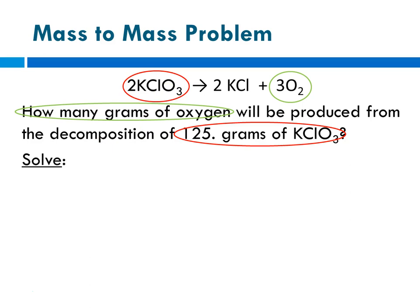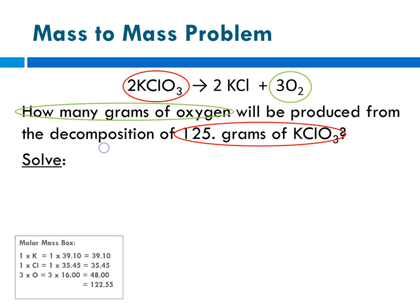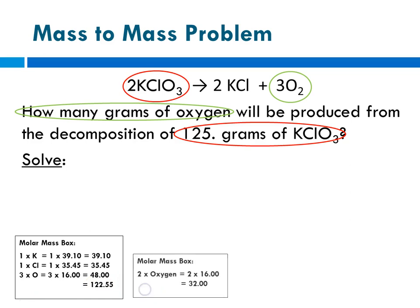Before we solve it, I like to get the molar mass out of the way. In my molar mass box: 1 times potassium is 39.10, 1 times chlorine is 35.45, and 3 times oxygen is 48. So the molar mass for potassium chlorate is 122.55. The molar mass for oxygen is 2 times 16, so it's 32.